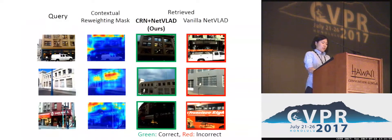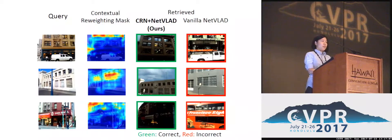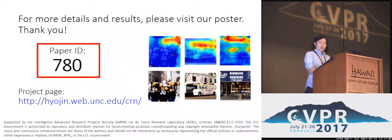Here we show some example results. From left to right, each column shows the query image, the generated contextual re-weighting mask, and the retrieved results with and without contextual weighting. Thank you, and we hope to see you at our poster.